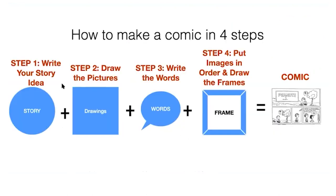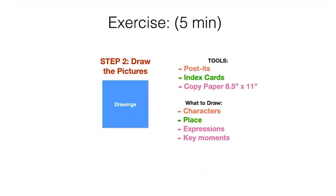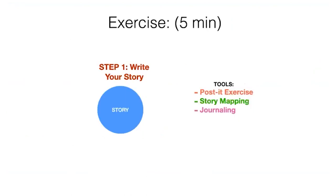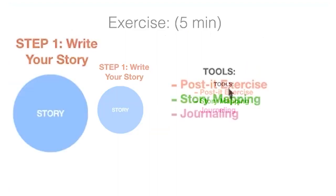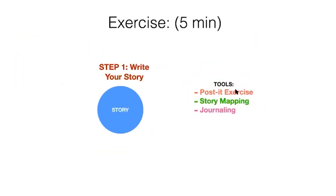Now it's time for the exercise. We're going to start planning your one-page comic in four steps. First, come up with a story idea — spend five minutes on that. Then draw the pictures. At home you'll write the words, draw the images, add the frames, and you'll have your one-page comic. Some ways to brainstorm: the post-it exercise — put different words together; a story map; or start writing in a journal. Spend the next five minutes on one of these.